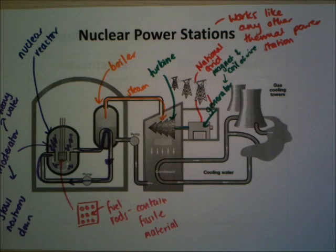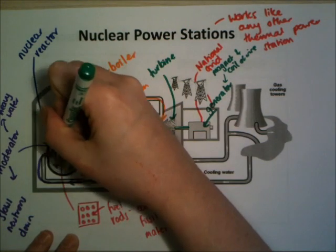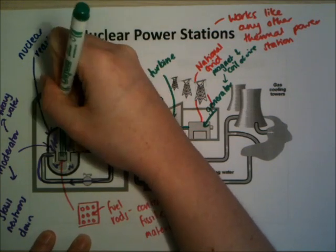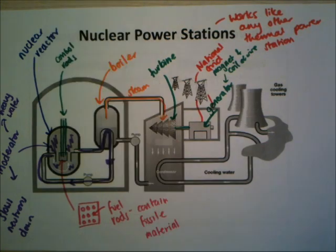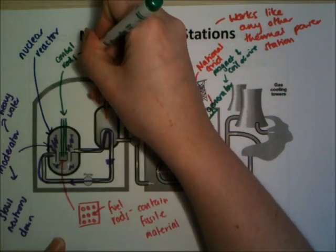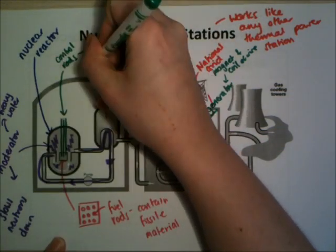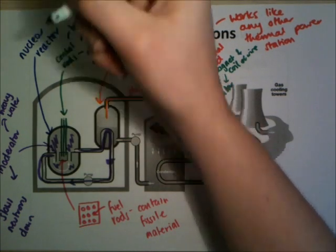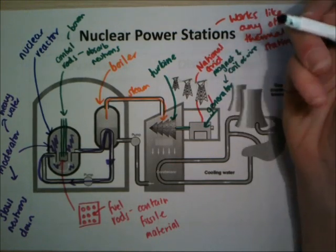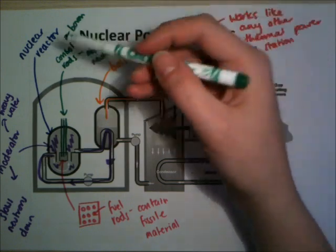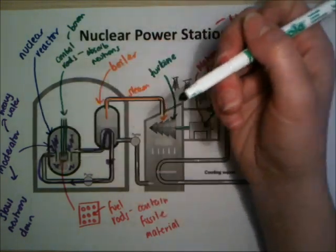Finally, there are control rods — hundreds of them in a nuclear power station — sticking up at the top of the reactor. Control rods contain a material, usually boron, that absorbs neutrons. What they do is slow down the reaction or stop it entirely. If there's too much fission happening, we lower the control rods, which absorb the neutrons and stop the reaction.